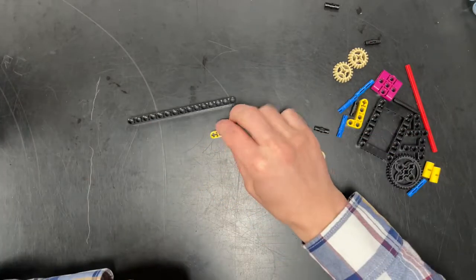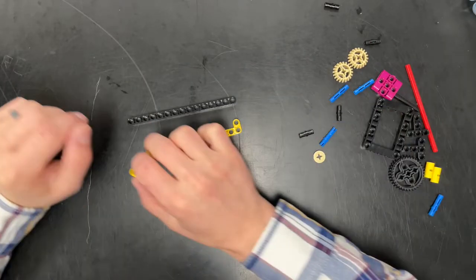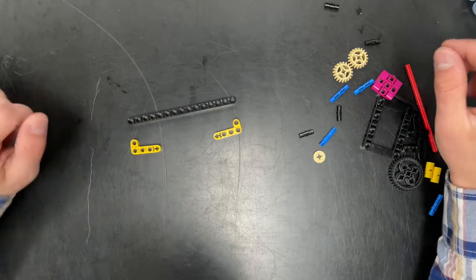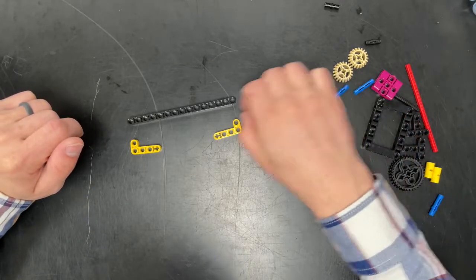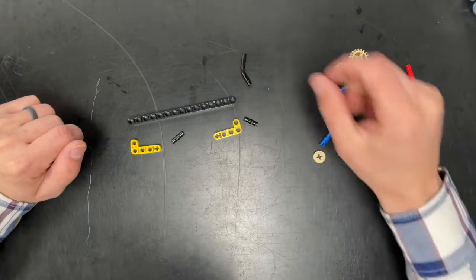So what you need: 15 black beam, yellow 2x4 connectors, L beams, and four black pegs. That is it.